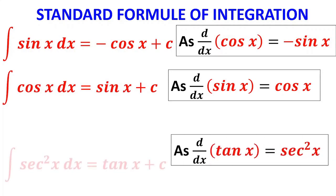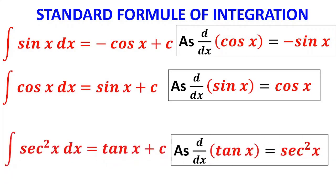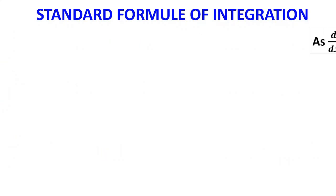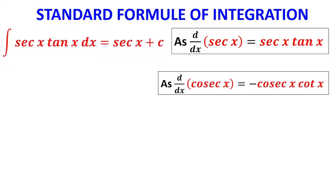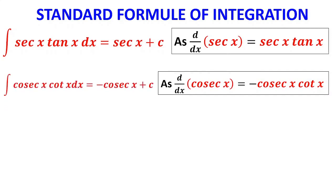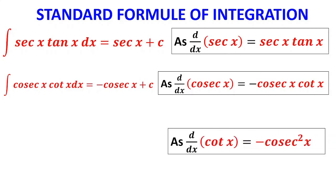Differentiation of tan x is sec²x, therefore ∫sec²x dx = tan x + c. Differentiation of sec x is sec x·tan x, therefore ∫sec x·tan x dx = sec x + c. Differentiation of cosec x is −cosec x·cot x, therefore ∫cosec x·cot x dx = −cosec x + c. Differentiation of cot x is −cosec²x, therefore ∫cosec²x dx = −cot x + c.